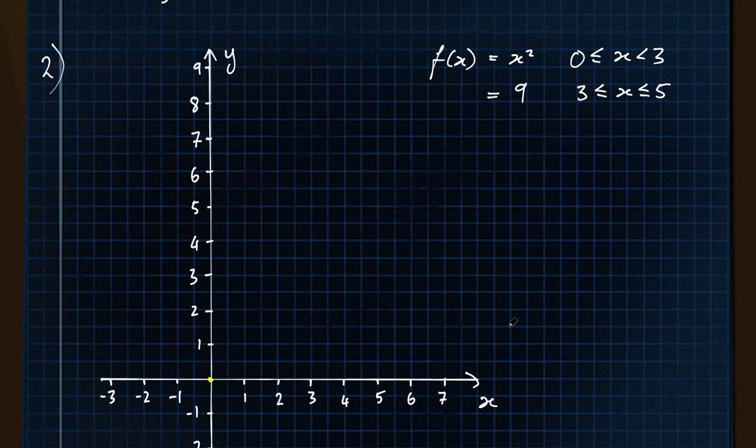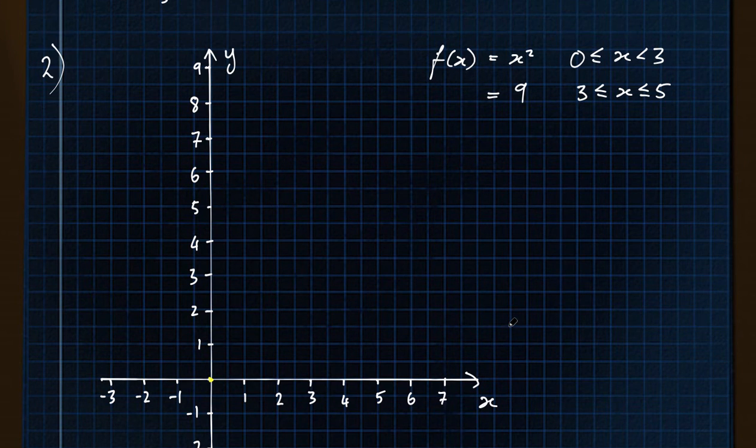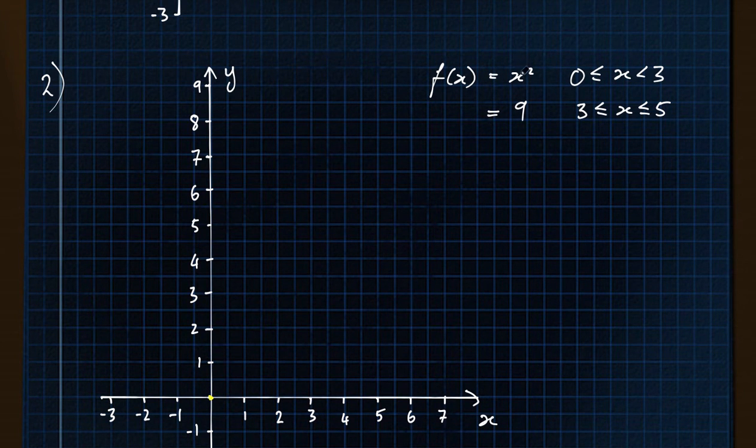In this one, again looking at our range, y equals x squared from 0 to 3. So at 0, y equals 0, and then from then on it equals up to 9. So y is between 0 and 9, that's the range for this one. Again, it doesn't ask us for the range, but it's sensible to work it out so that you draw the appropriate axes.